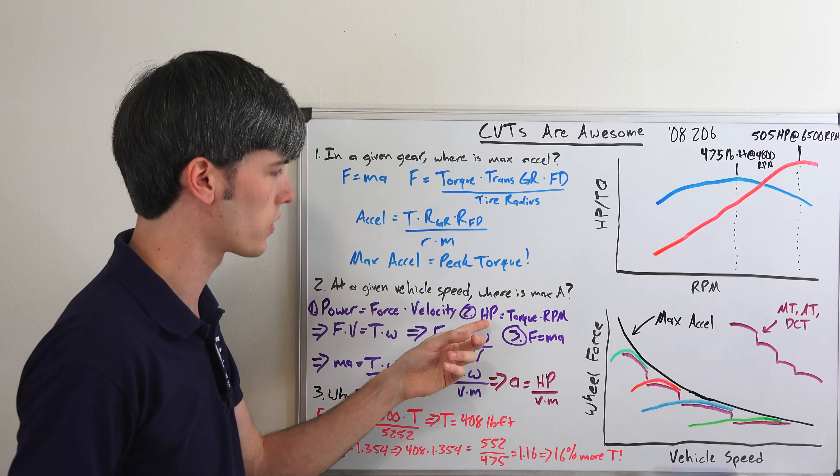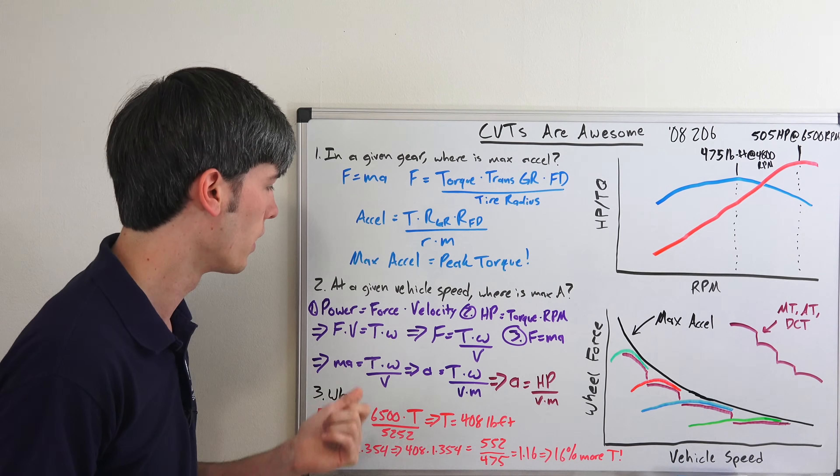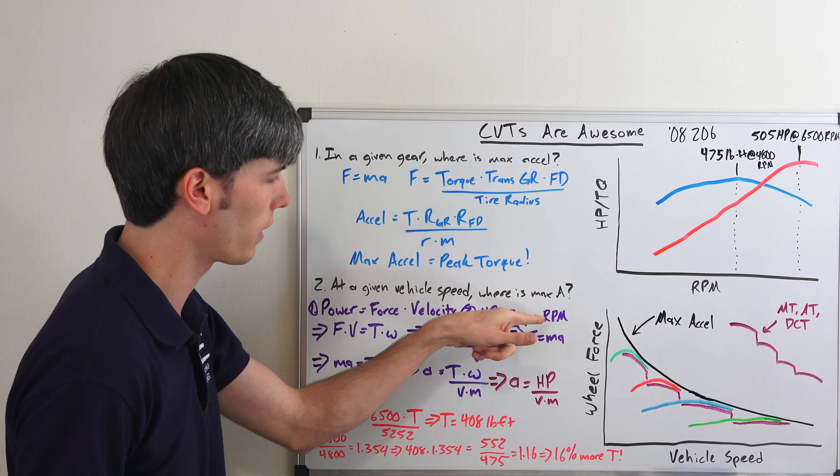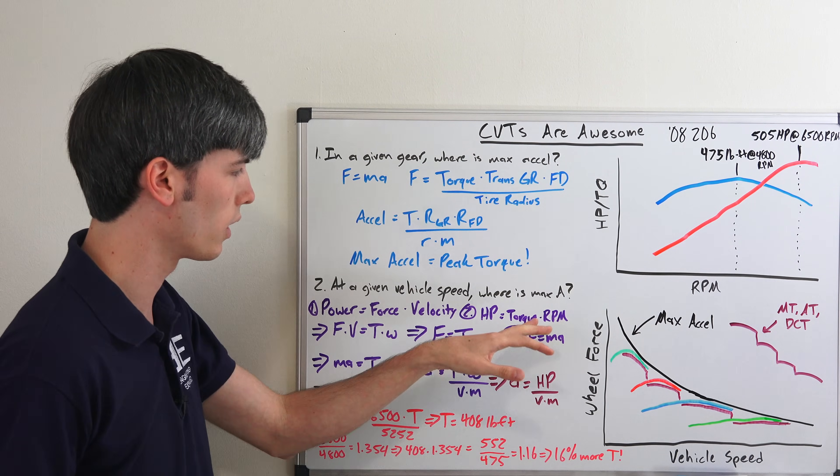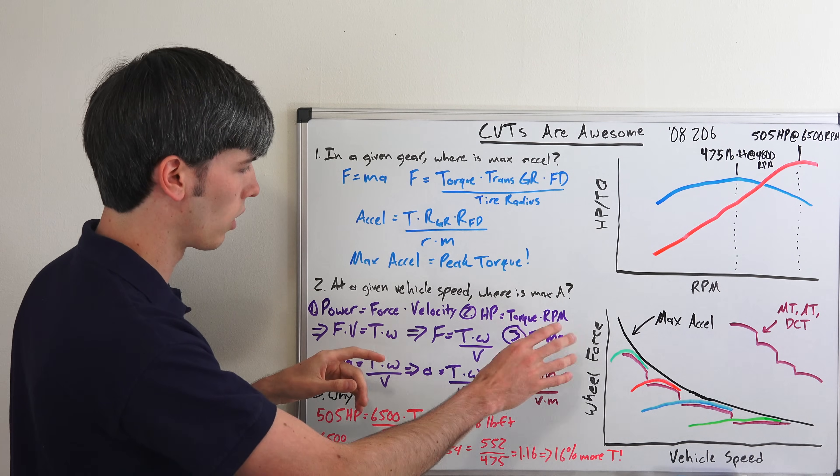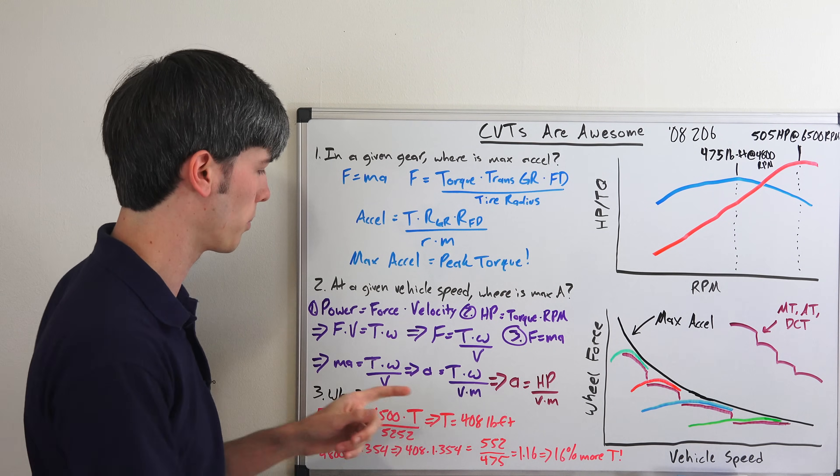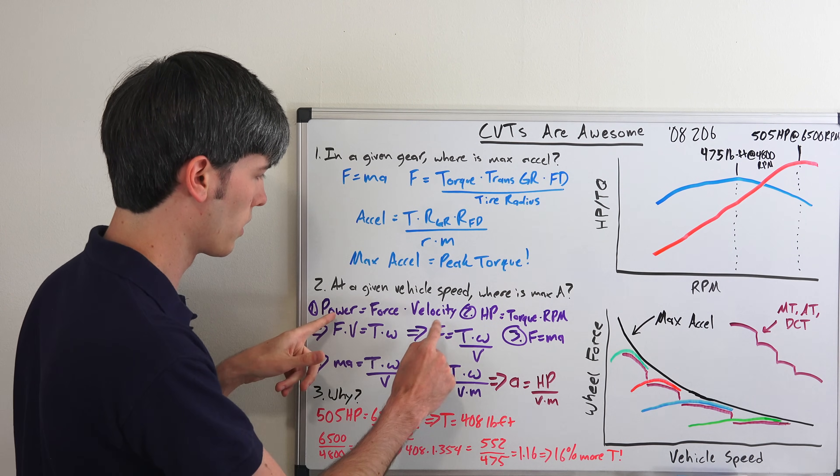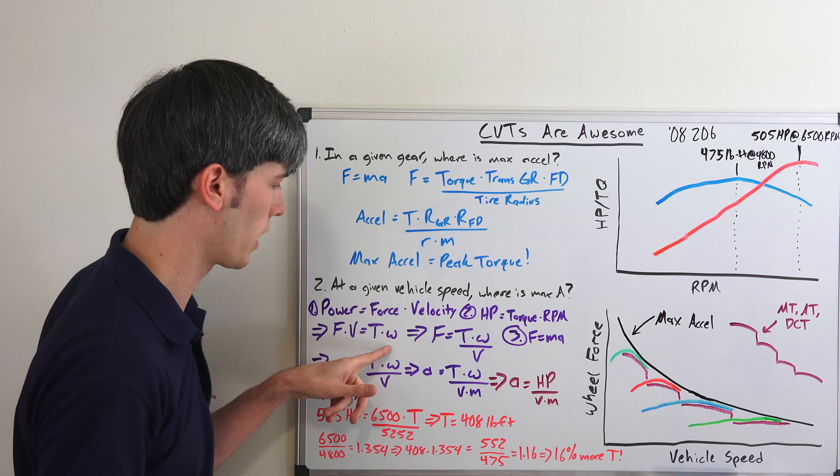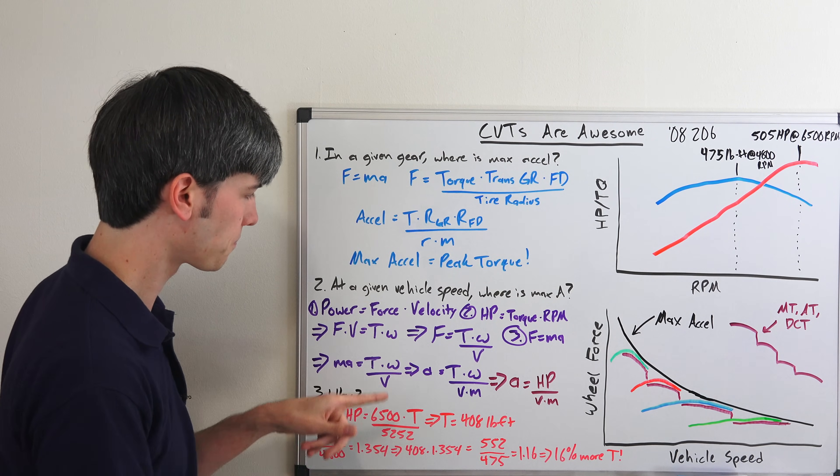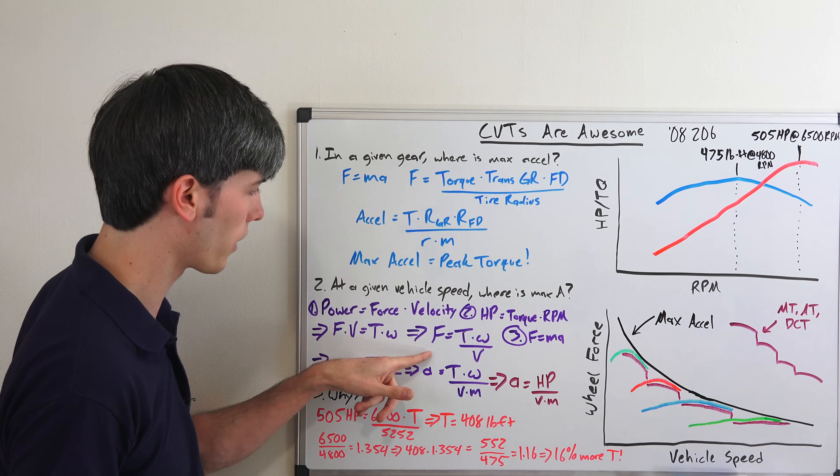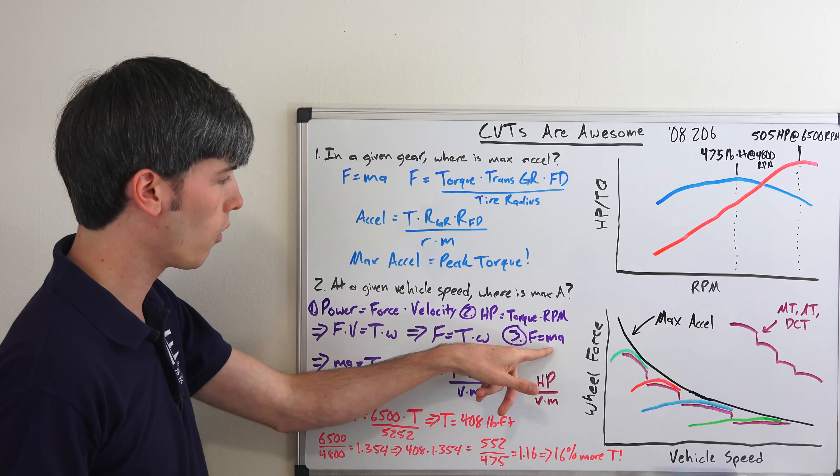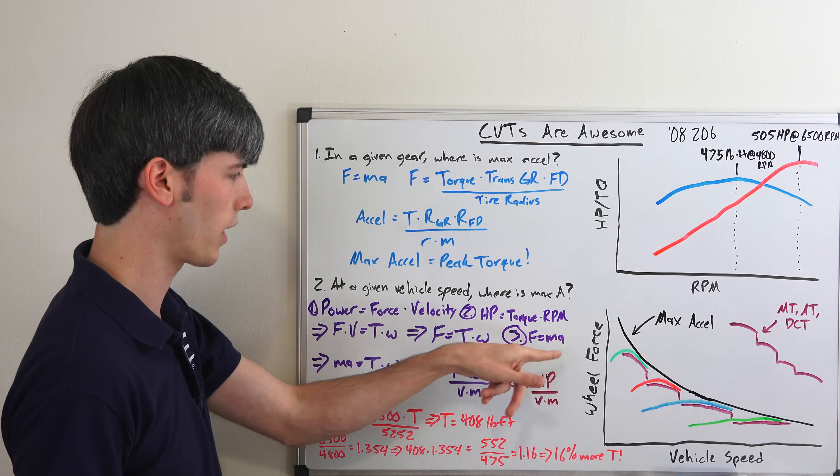So we can set these two equal to each other. Now of course there would be a 5252 divided underneath these if you're using the imperial system, but regardless, horsepower is a function of torque and RPM. So we can say that force times velocity, setting these two equal to each other, power equals power, is equal to torque times the engine RPM. Then we can divide velocity on the other side: F = T × ω / V. We know also that force is equal to mass times acceleration.